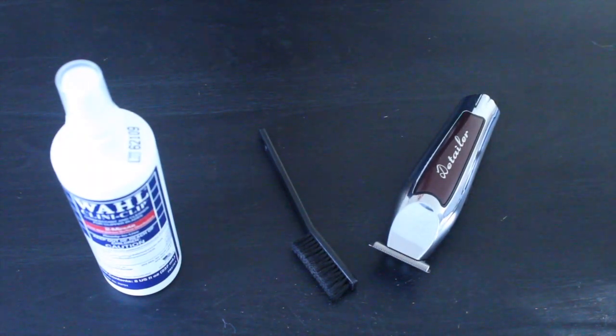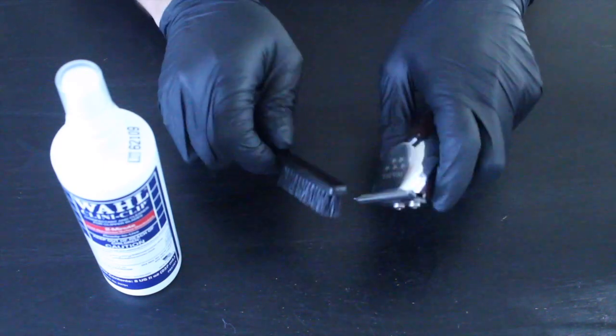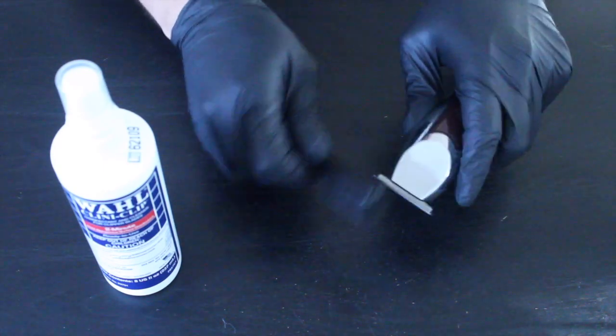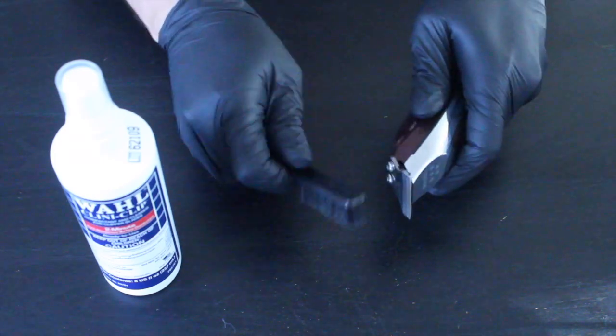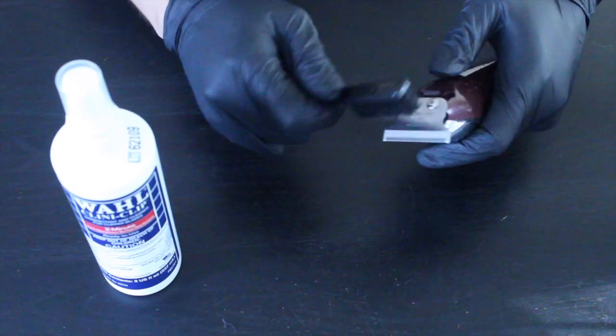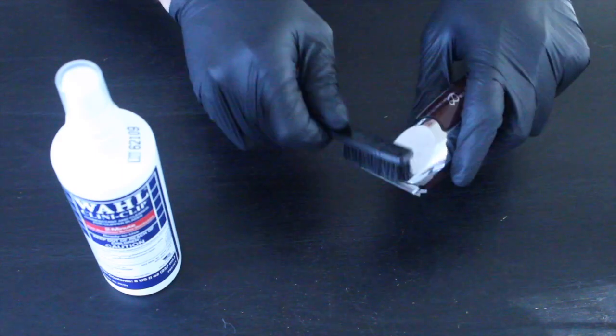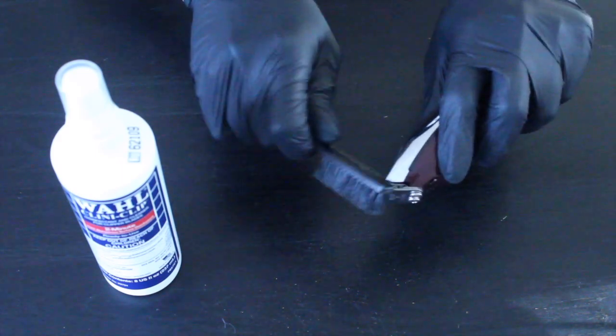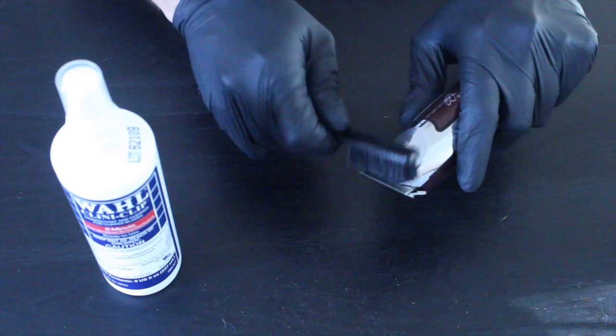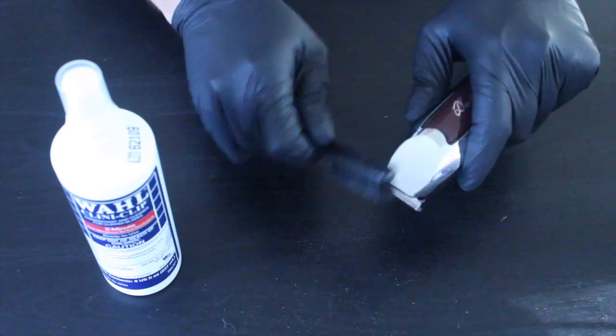What we're going to do is start off with our trimmer. This is the Wahl Cordless Detailer Li. Use your trimmer on the first cut of the day. It is cleaned and oiled from previous evening preparation. Upon haircut completion, remove loose debris from your trimmers with a brush.